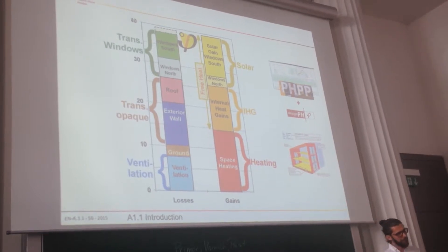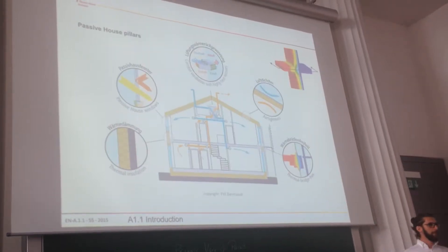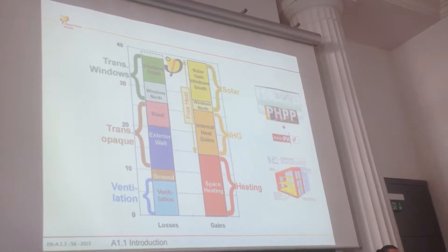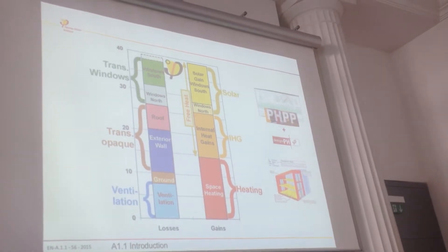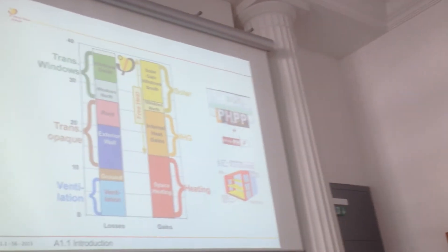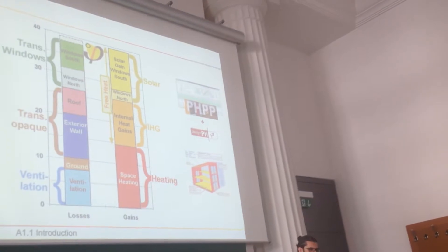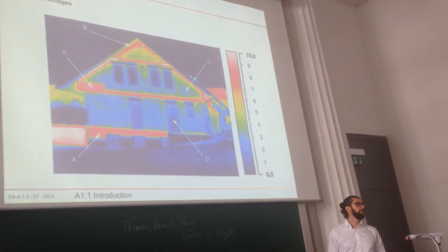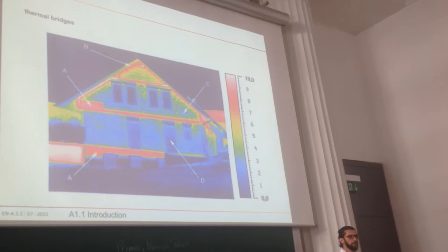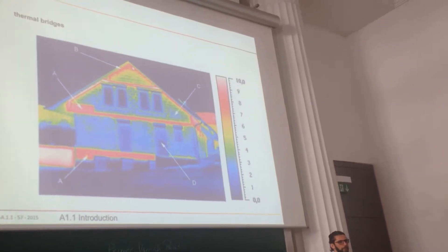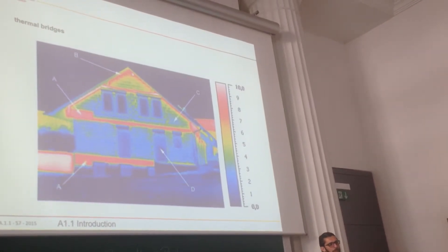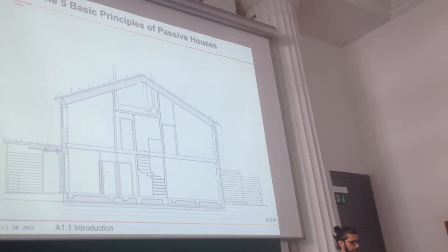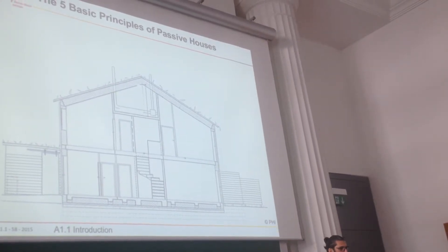That means these five points and the energy balance are the magic. When it's done wrong, we can see it. We can photograph it. We can see the heat bridges. And the heat bridges section will make the same points again but with some numbers.